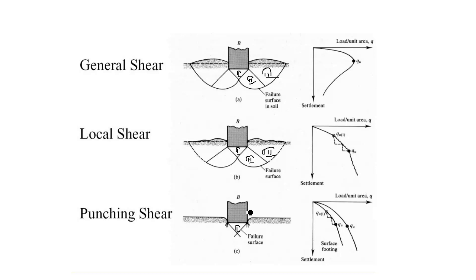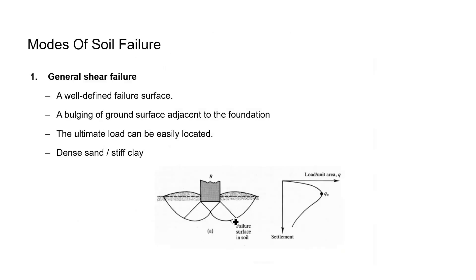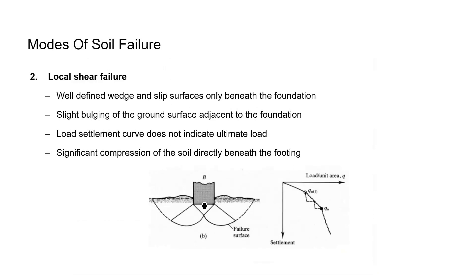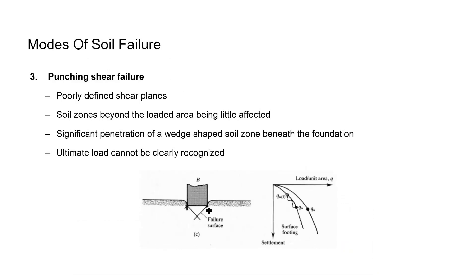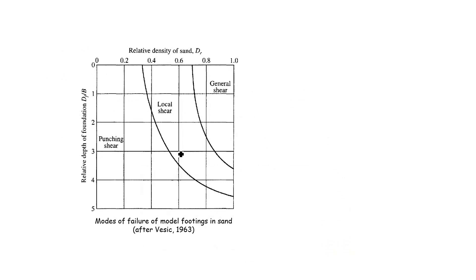All these failure patterns depend upon the type of soil and foundation dimensions. There is a chart showing that failure type depends on the relative density of sand and relative depth of foundation, that is D_F/B. This chart shows the different failure patterns for different relative density values and D_F/B values.